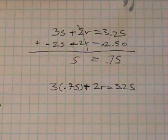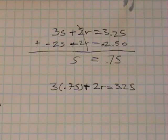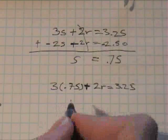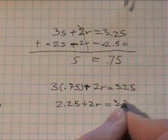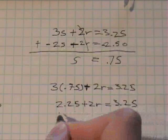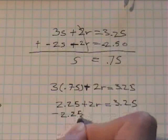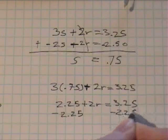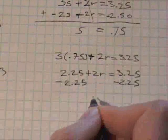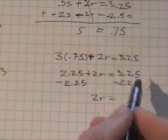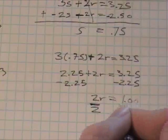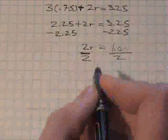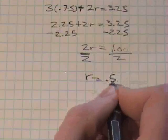Get your calculator out unless you have that memorized. Put in 3 times 0.75, which is 2.25. So 2.25 plus 2r equals 3.25. Let's subtract 2.25 from each side. 2r equals this is just a dollar. So if we divide by 2, we're going to come up with r equals 50 cents.